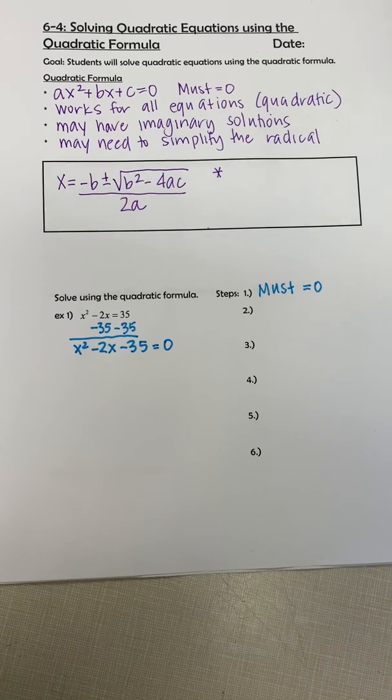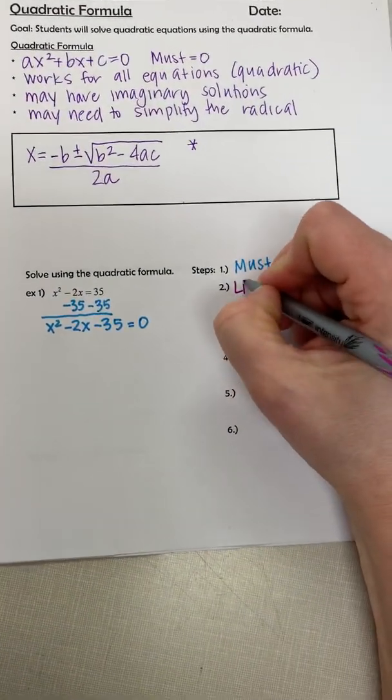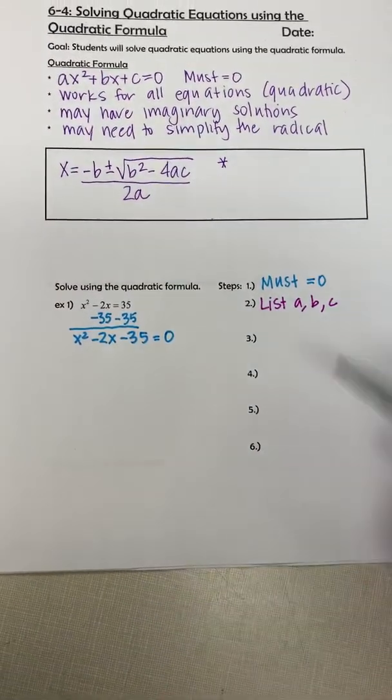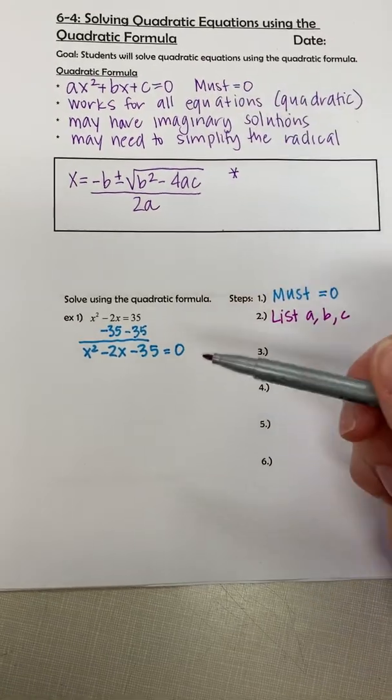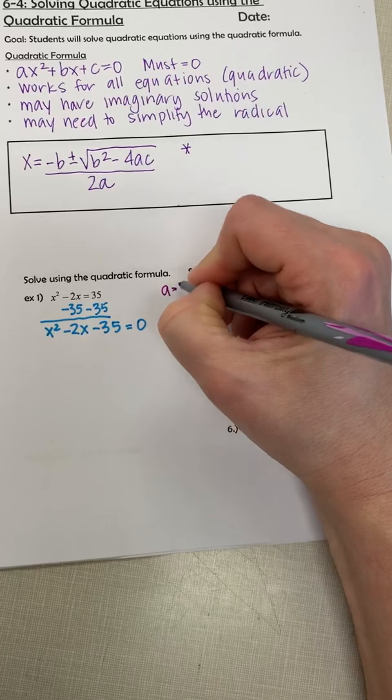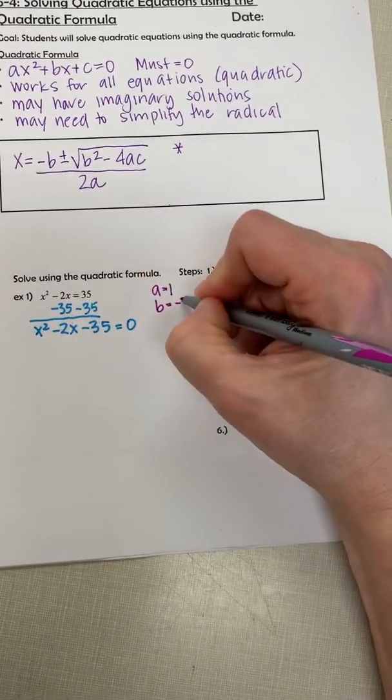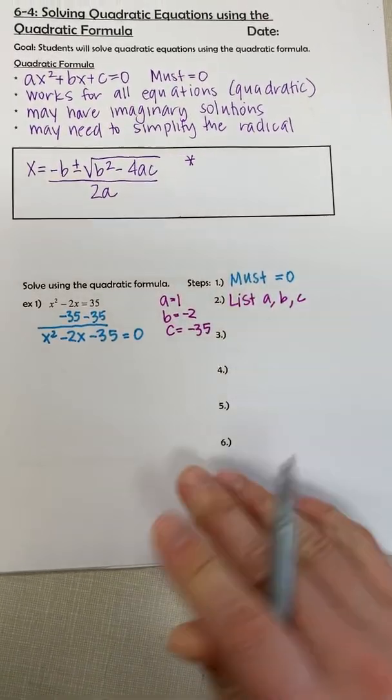Once I know it equals zero, then I like to list what A, B, and C are. The reason I like to do that is then I know what I'm talking about up here in terms of A, B, and C. The A value is always in front of the x squared, so in this case A is 1. B is the middle number, so that's negative 2. And then C is the one without a variable, so that's negative 35.